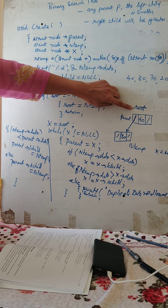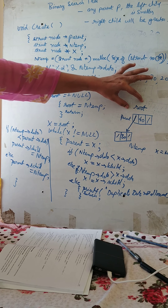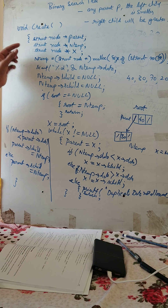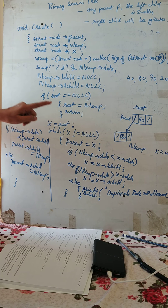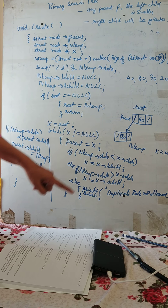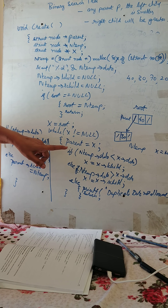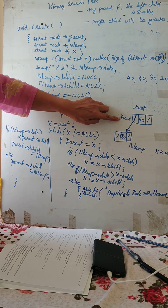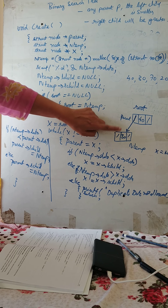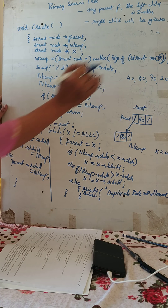To summarize: first, we inserted the root node — initially root was empty, so the new node became the root. For the second insertion, we requested space, scanned data 30, and started traversal by assigning x = root. After one iteration, x became null and parent was pointing to node 40. Since the new node was smaller than parent, it got attached as the left child of node 40.